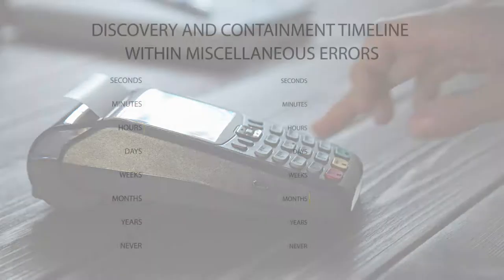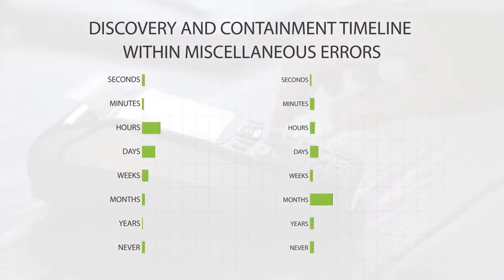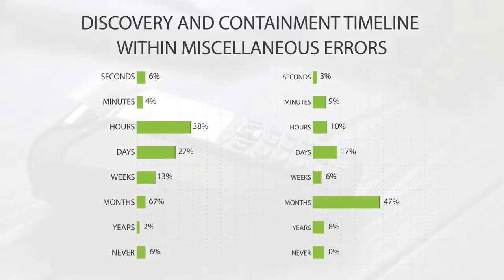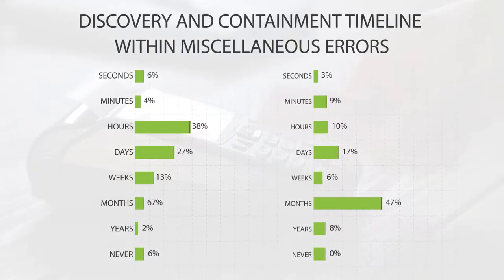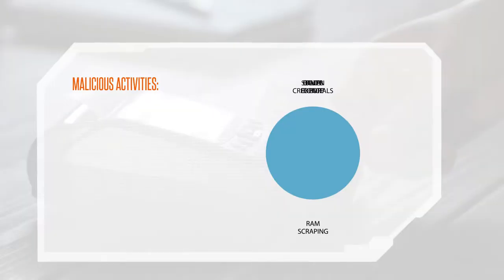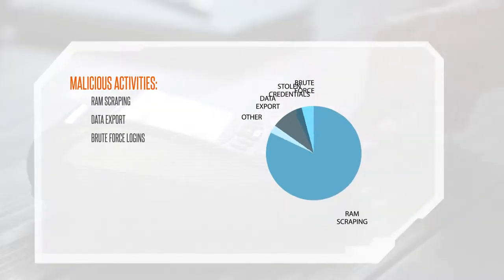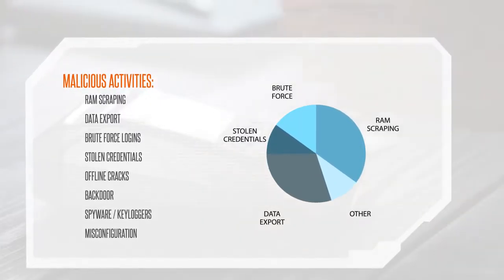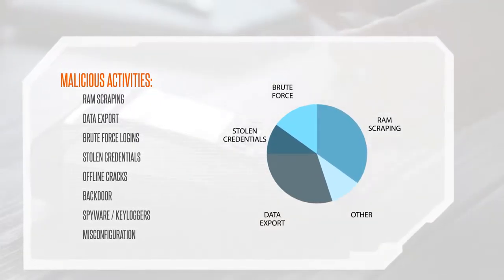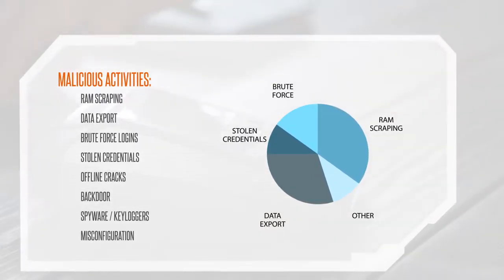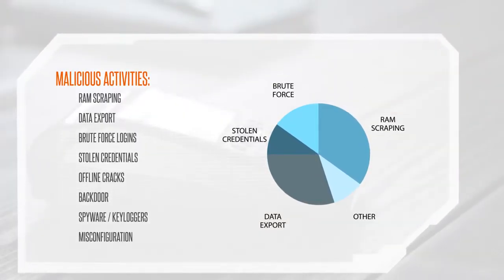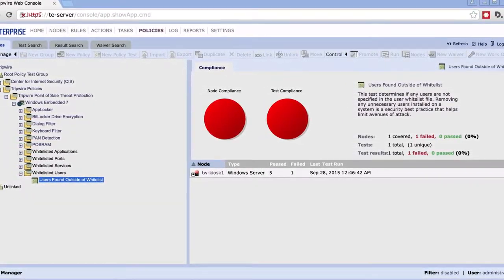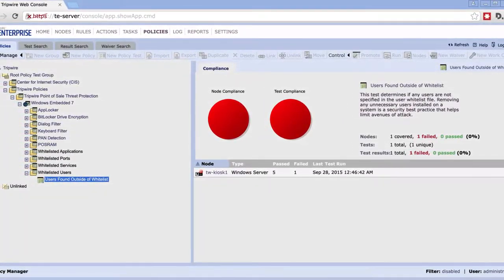Current data indicates that it takes weeks to months to discover a threat, and in most cases the data has already been breached. Having rules customized to your attacker's behavior decreases the time to respond and minimizes the damage. Let's have a look at what Tripwire uniquely offers for point-of-sale protection.